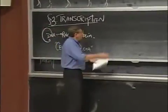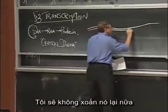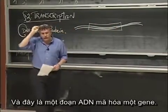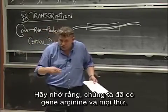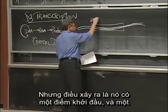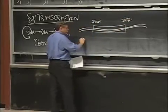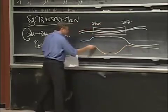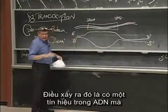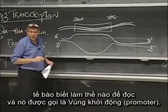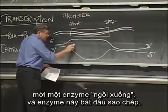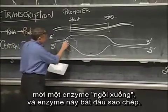So, transcription. Here's my genome. Here's my double helix. I'm going to stop wrapping around itself just because it's tedious. Here's a chunk of DNA that encodes a gene — maybe it's a gene that makes an enzyme for arginine biosynthesis. What happens is it has a starting point and a stopping point, five prime to three prime. There is a signal in the DNA that the cell knows how to read, called a promoter.